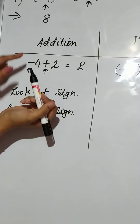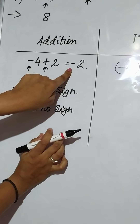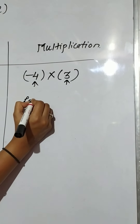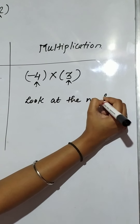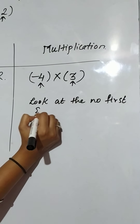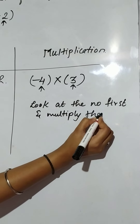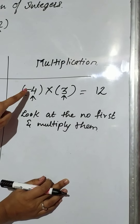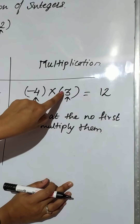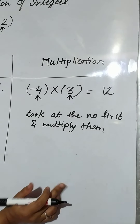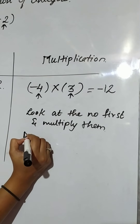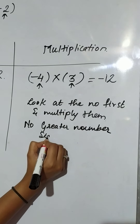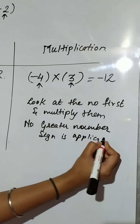After performing the subtraction, we consider the greater number's sign. The greater number is 4, its sign is negative, so our answer is minus 2. In multiplication, we look at the numbers first and multiply them: 4 threes are 12. Then we directly give the sign — one negative and one positive means minus plus is minus — so our answer is minus 12. No greater number sign rule is applicable in multiplication.